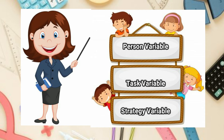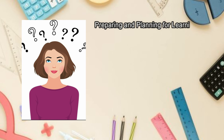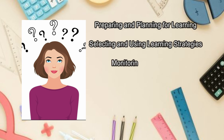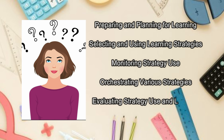Second is the task variable. Students need knowledge of available information, resources, and the task difficulty. Third and final is the strategy variable. Students must identify goals. Students can use this knowledge by preparing and planning for learning, selecting and using learning strategies, monitoring strategies, orchestrating different strategies together, and evaluating strategies and learning.